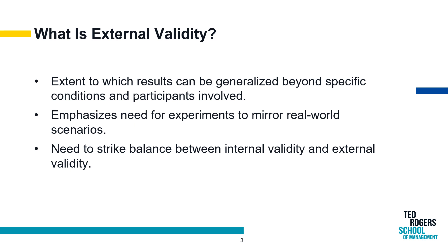Balancing internal and external validity is a delicate task. While internal validity ensures the accuracy and reliability of results within the specific experimental conditions, external validity broadens the scope, enabling researchers to draw connections between their findings and the complexities of reality. Researchers must navigate these intricacies conscientiously, recognizing that an overemphasis on internal validity might limit the generalizability of results, whereas a disregard for internal validity could compromise the integrity of the findings.